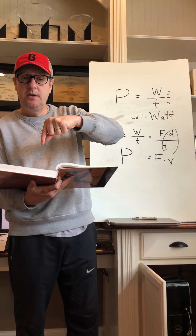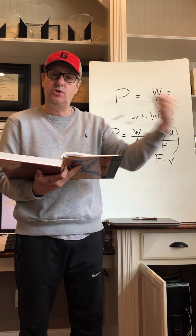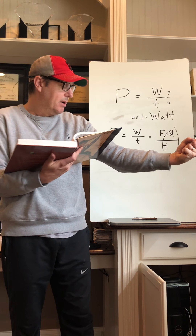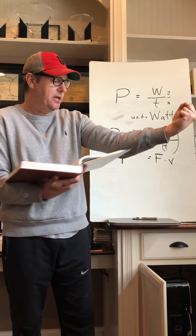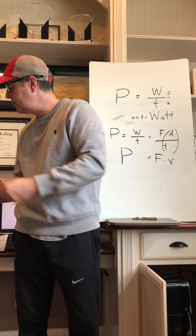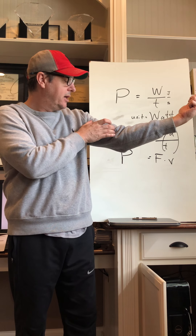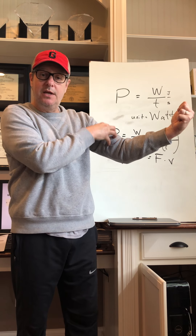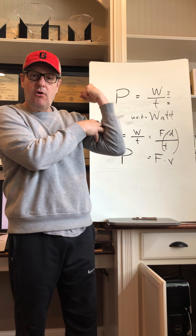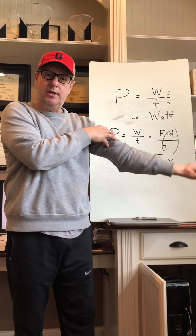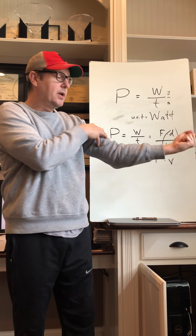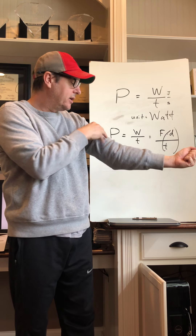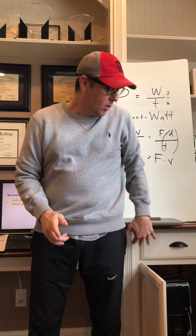Human muscle is only about 20 to 25% efficient at converting glucose into usable energy — energy you can use to produce mechanical energy. To move your arm, your arm is basically a machine: it's a lever, and your muscles move that lever at its pivot point, the fulcrum. Your bicep pulls your lower arm upward like a machine. That bicep muscle is only about 20 to 25% efficient at converting chemical energy into mechanical energy — kinetic energy, or gravitational potential energy if the arm moves upward.